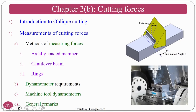Continuing with cutting forces, we also cover an introduction to oblique cutting — we do not go into deep detail, just what oblique cutting is. For the measurement of cutting forces we see how to measure experimentally using axially loaded members, cantilever members, rings, and all those things. We also cover the dynamometer — how it works, what are its requirements, how it measures forces, machine tool dynamometers, and general remarks.